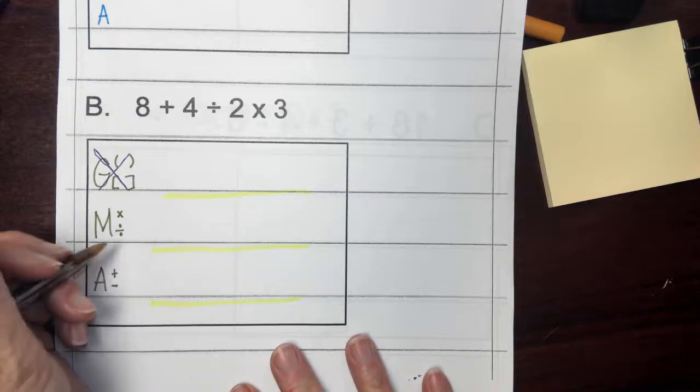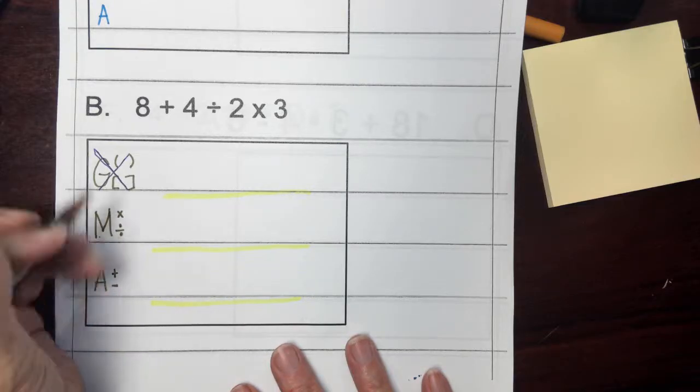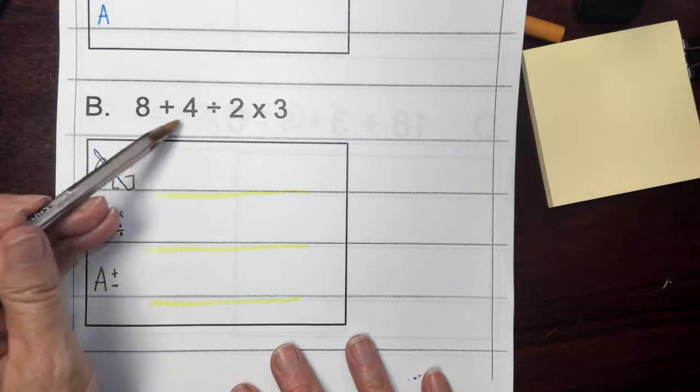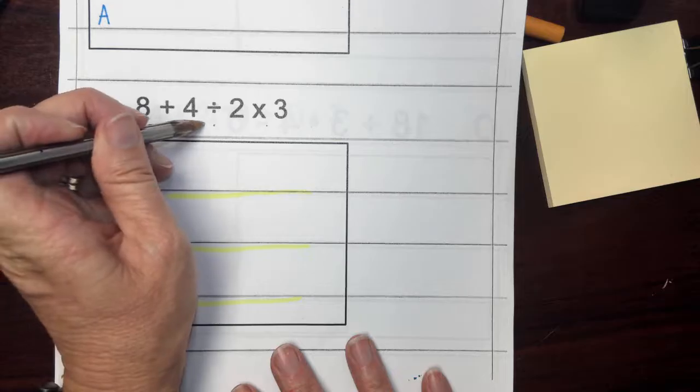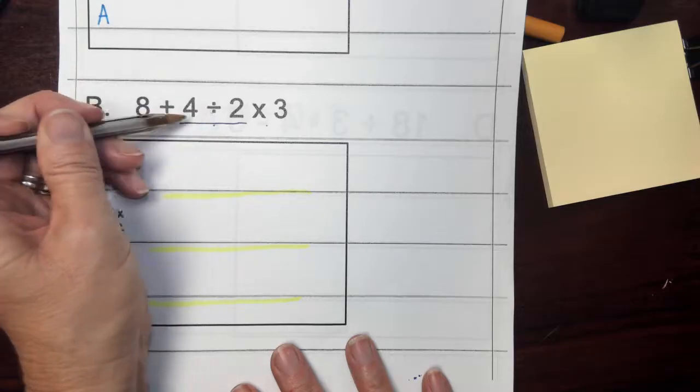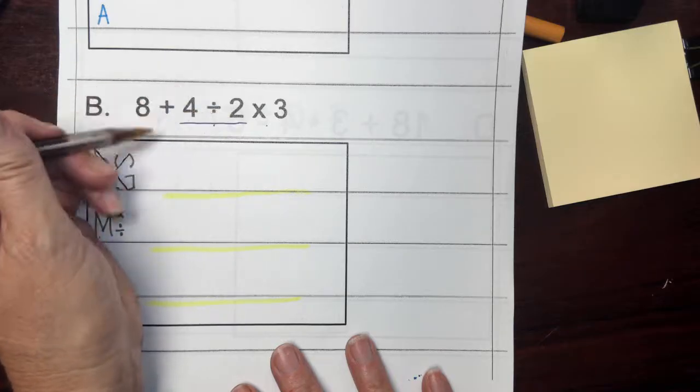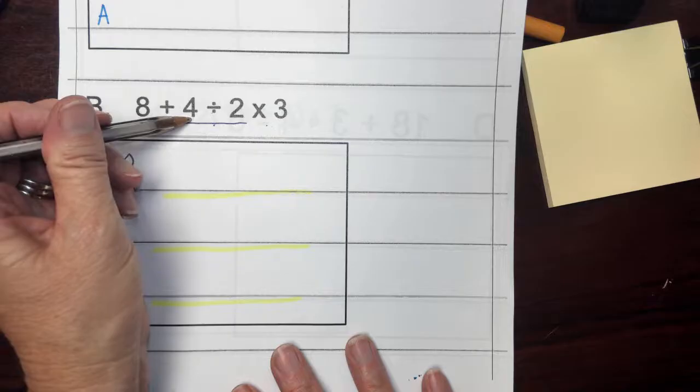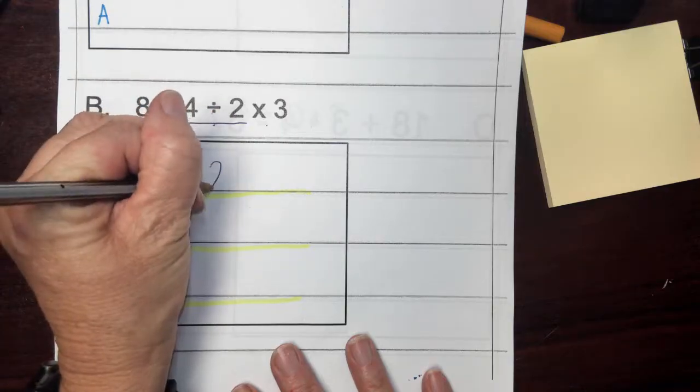The next thing I would be looking for would be any multiplying or dividing, whichever I see first. So I happen to see division before multiplication. So I'm actually going to underline the two numbers in front of my division sign and behind my division sign. And those are the numbers I'm going to divide. So if I take the number four and I divide it in half, I'm going to get two.